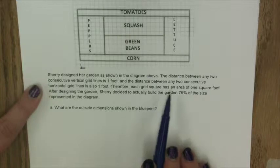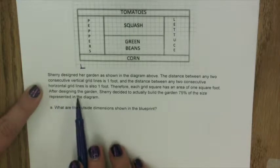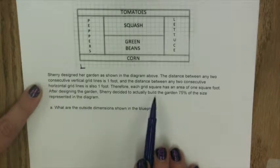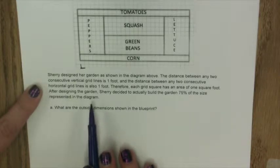Therefore, each grid square has an area of one foot squared. After designing the garden, Sherry decided to actually build the garden 75 percent of the size represented in the diagram.